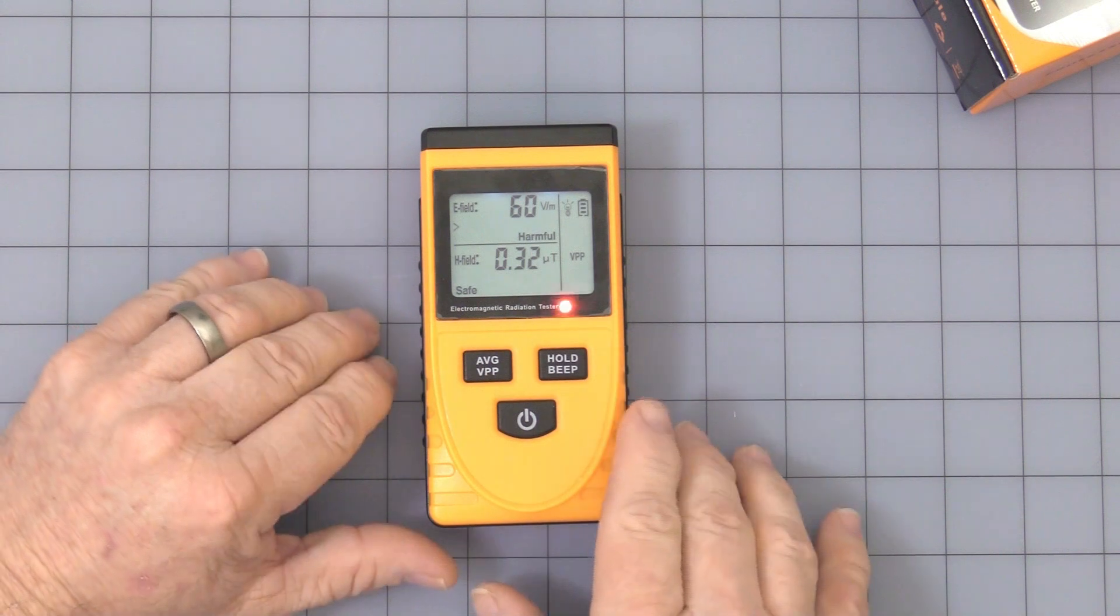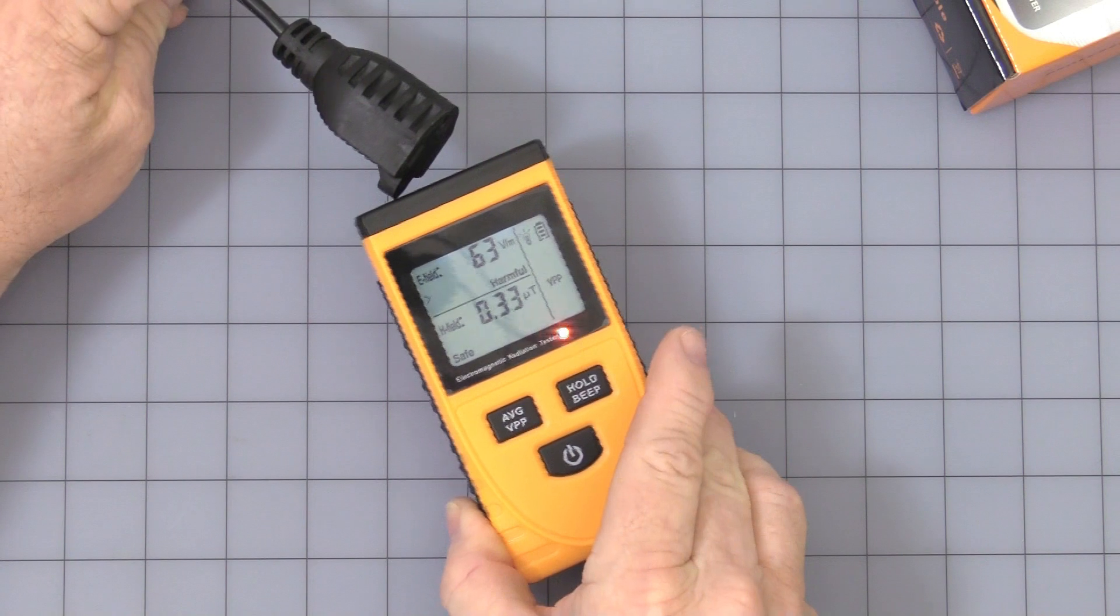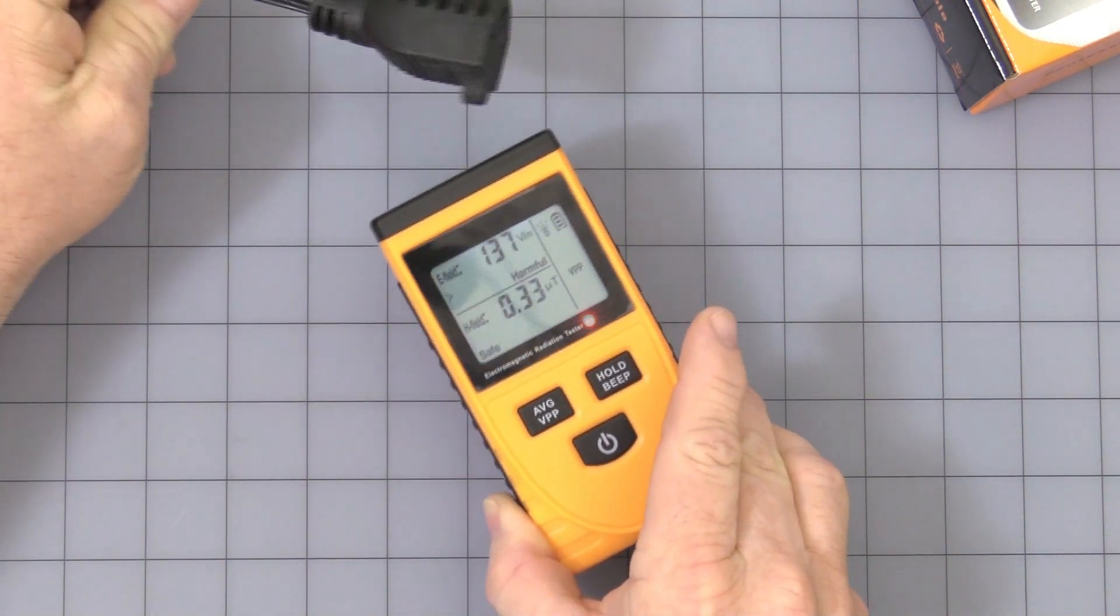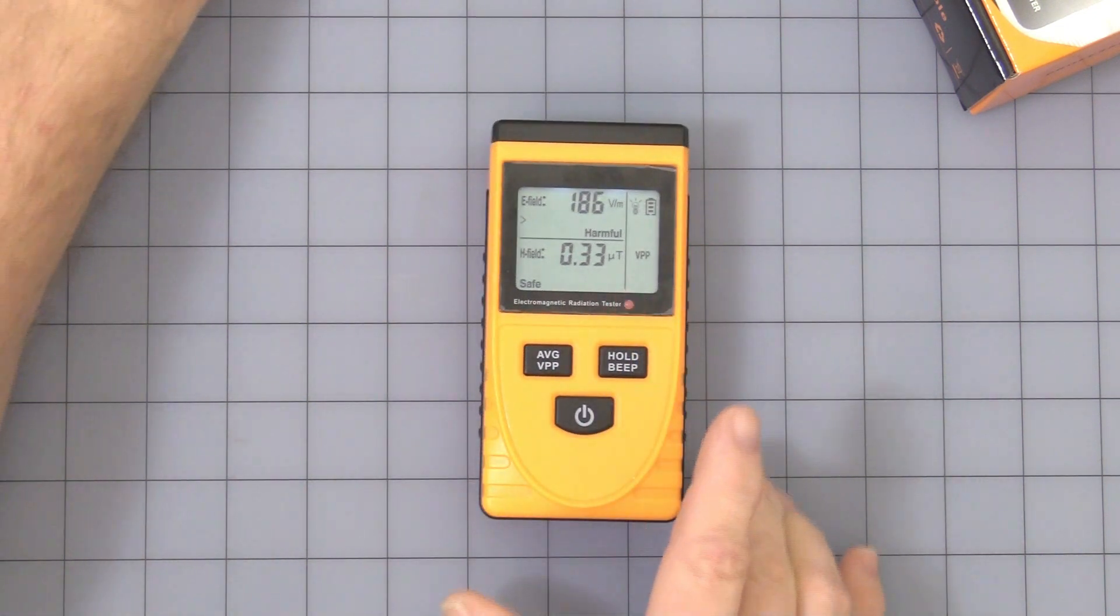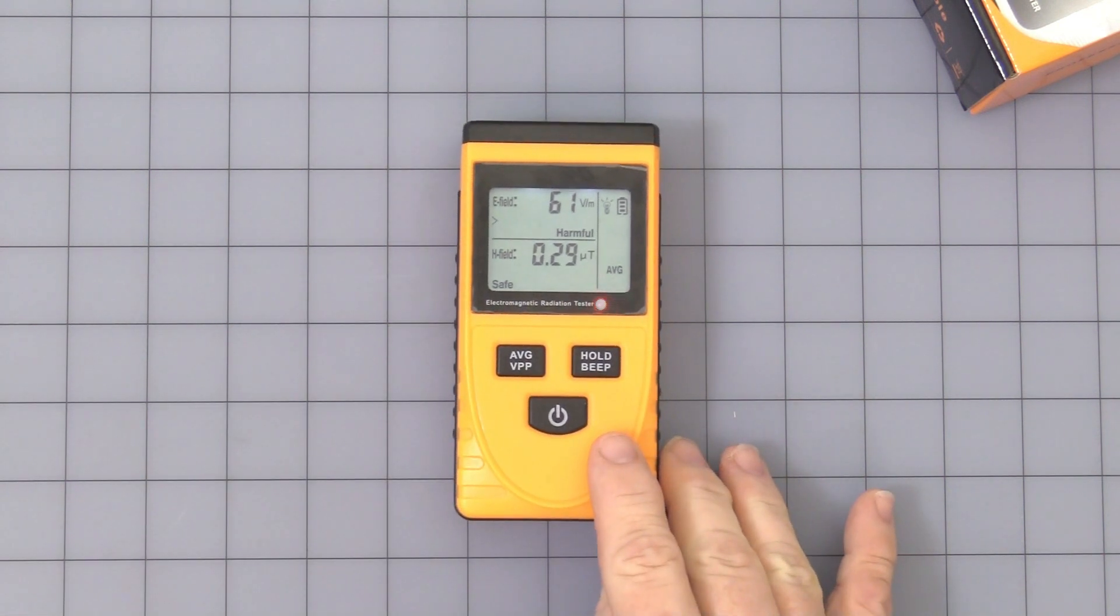Now when you have the VPP, it maintains the highest possible reading until you turn it off. As we play around with this little AC power cord, you can see it goes up and stays until you hit the button again to go back to average.